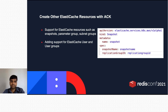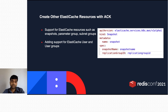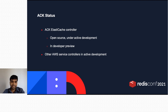With ACK, Kubernetes users can create other ElastiCache resources such as snapshots, parameter groups, and subnets. Here in the slide, you can see an example of how to create a snapshot using ACK. A Kubernetes user would need to specify the snapshot name and ElastiCache cluster ID, then use kubectl apply to create a new snapshot. We are currently working on adding support for Redis users, ElastiCache users, and user groups, which supports Redis ACL functionality. ACK ElastiCache controller is open source and in active development, currently in developer preview. Many other AWS services are also in active development, including SNS, S3, and RDS.